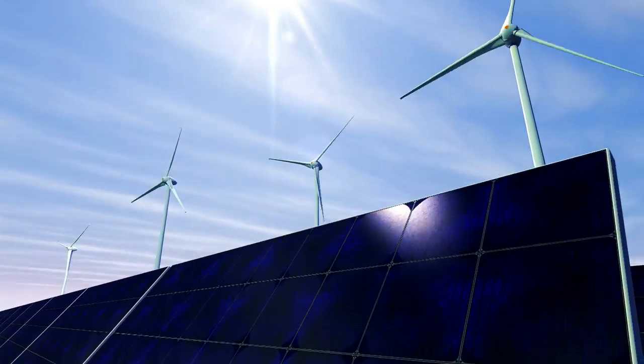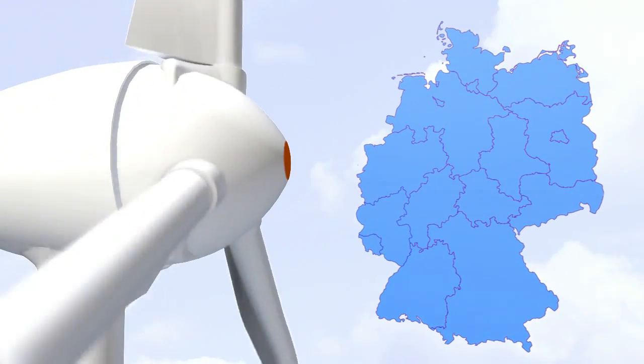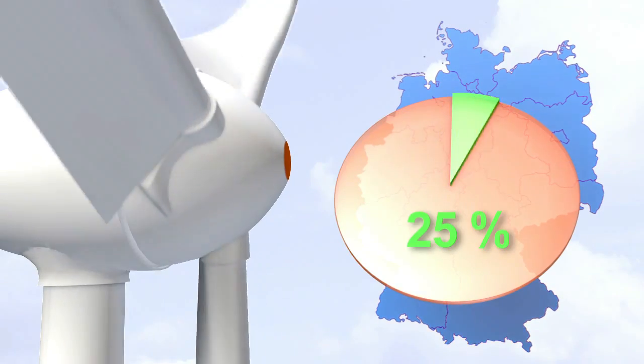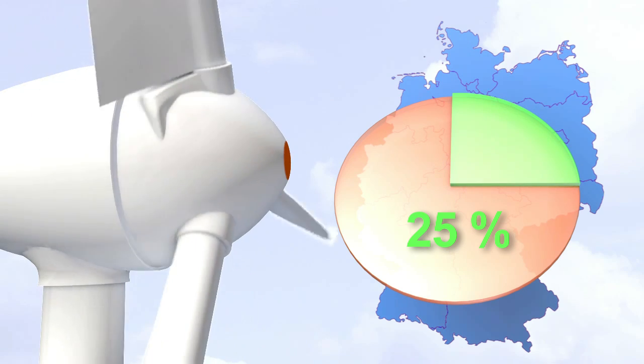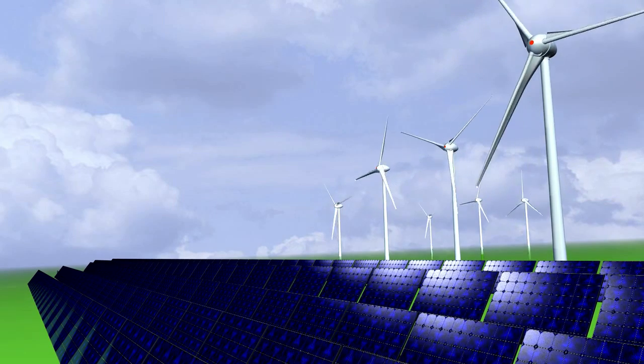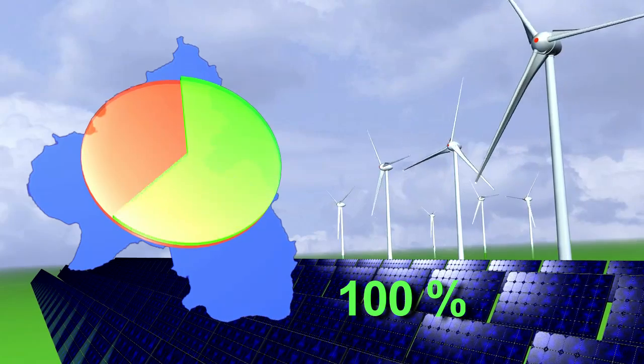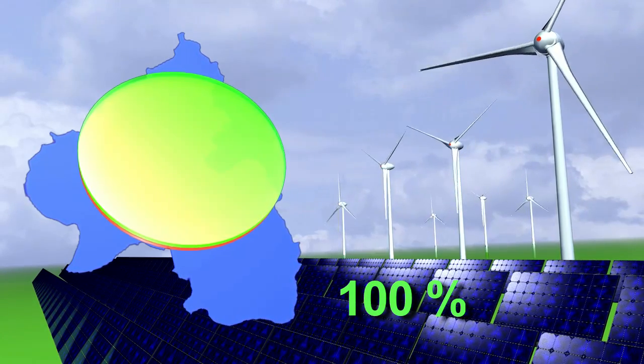Renewable energy is the future. In Germany, electricity from renewable sources currently covers about 25% of the demand, but that's not enough. The German federal state of Rheinland-Palatinate aims to cover 100% of its power demand by energy generated entirely from renewable sources, mainly by wind.